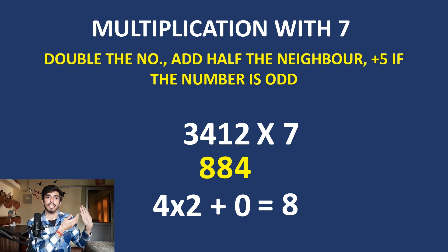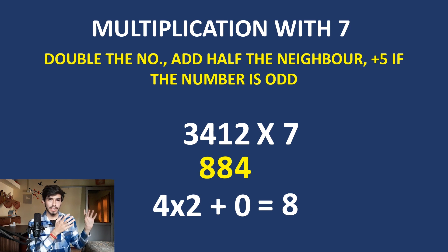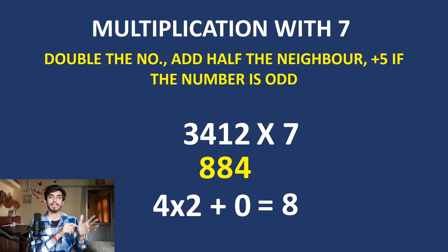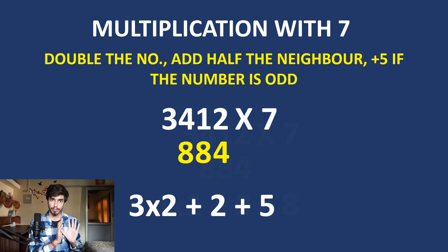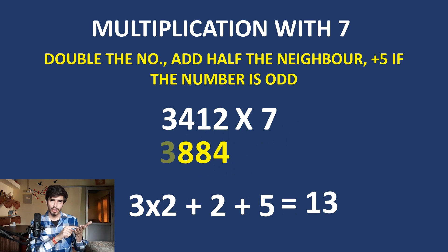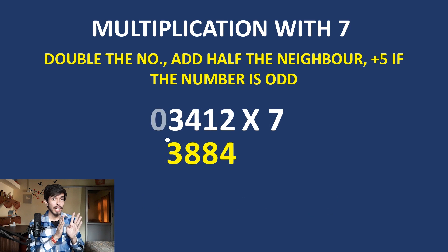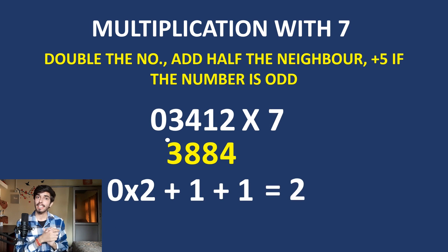Apply the key for 7 and calculate the answer yourself — only then will you learn. The tricky part is when you encounter 3: double 3 is 6, add half of its neighbor 6 which is 3, giving 9, and since 3 is odd add 5, giving 14. Count: 8, 9, 10, 11, 12, 13 — so write 3 and a dot for the carry. Continue along and always remember to add the carry to get the right answer.